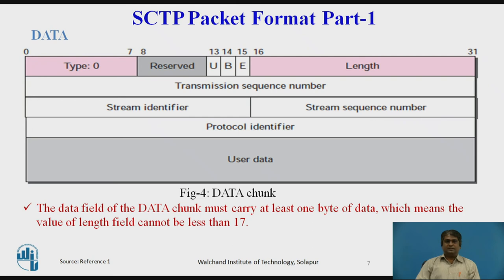The transmission sequence number (TSN) is a 32-bit field initialized in an init chunk for one direction and in the init ACK chunk for the opposite direction. The stream identifier is a 16-bit field defining each stream in an association — all chunks belonging to the same stream in one direction carry the same stream identifier. The stream sequence number is a 16-bit field defining a chunk in a particular stream. The protocol identifier is a 32-bit field used by the application to define the type of data, ignored by the SCTP layer.